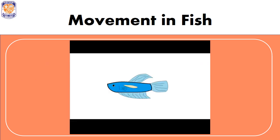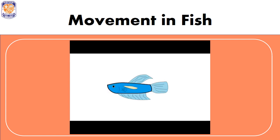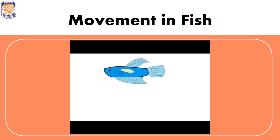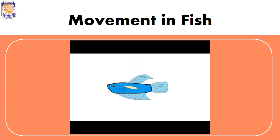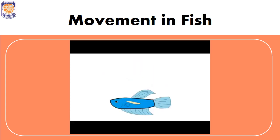All types of fish have a special structure inside their body which helps them to remain afloat or move up and down inside the water. This structure is known as the swim bladder. The swim bladder can be inflated or deflated according to the need of the fish. Whenever the fish needs to move towards the surface, it inflates the bladder.